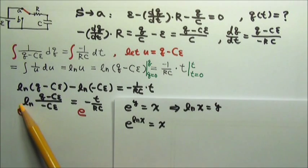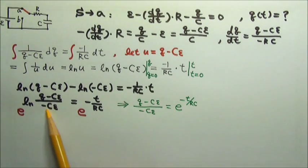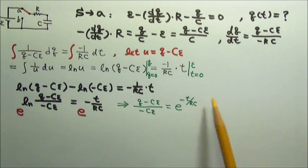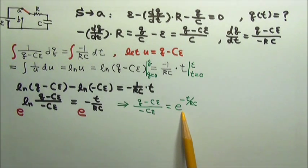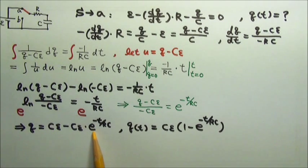So here, e to the natural log x should equal to x. So we get this equals to e to the negative t over RC. Our goal is to solve for q. So to solve for q, first we can multiply by negative Cε on both sides and then add Cε on both sides. So this turns into q equals to Cε minus Cε times the exponential decay.